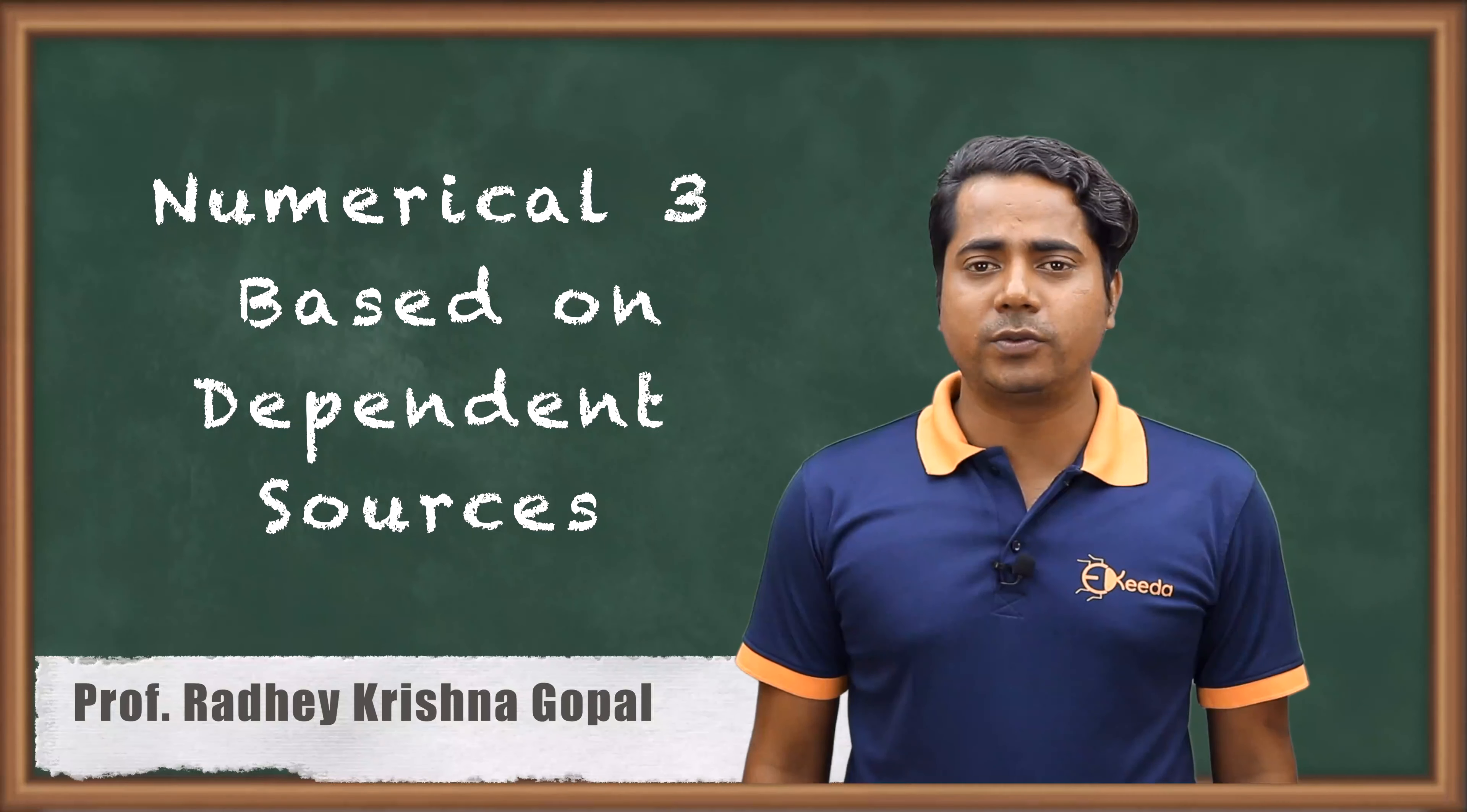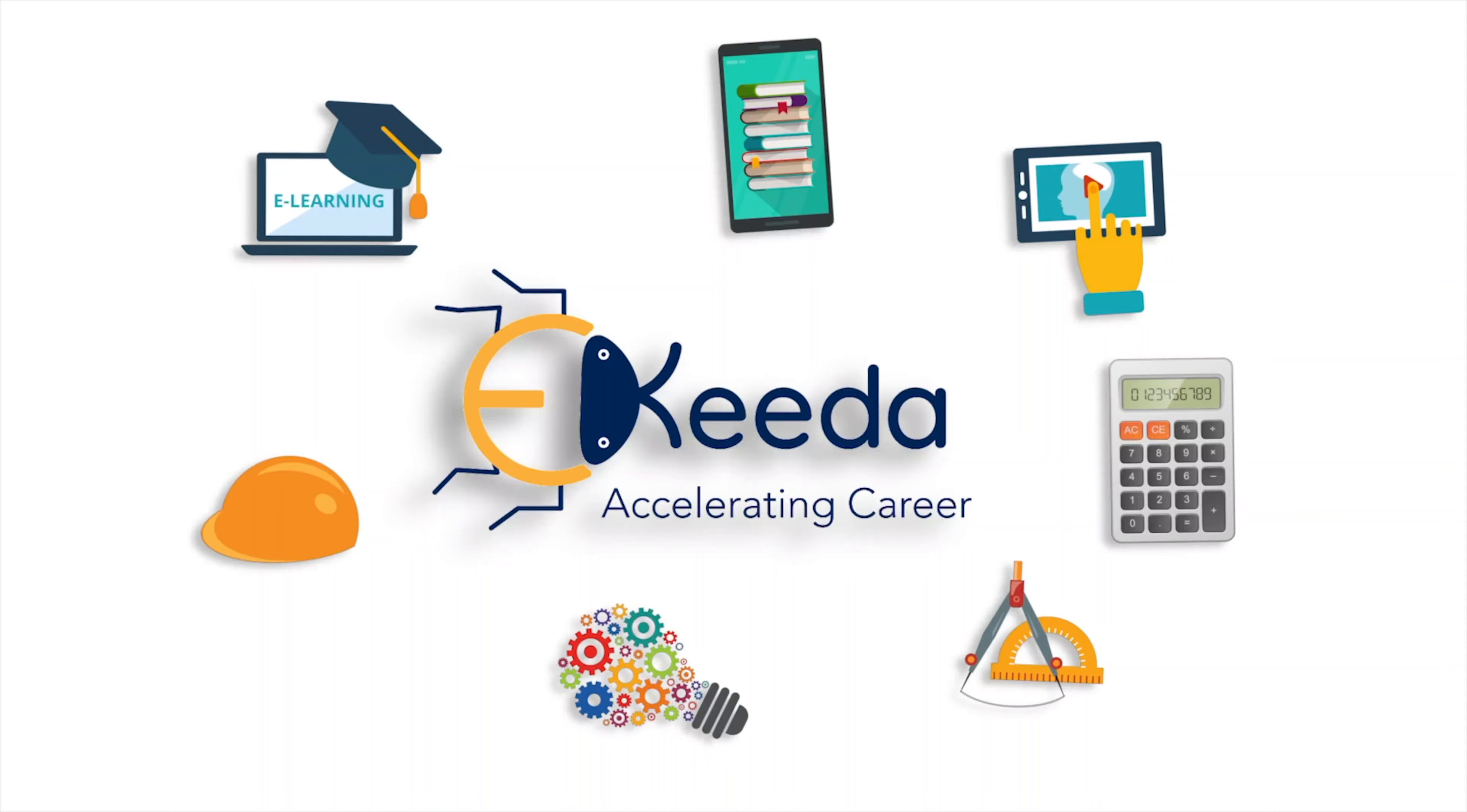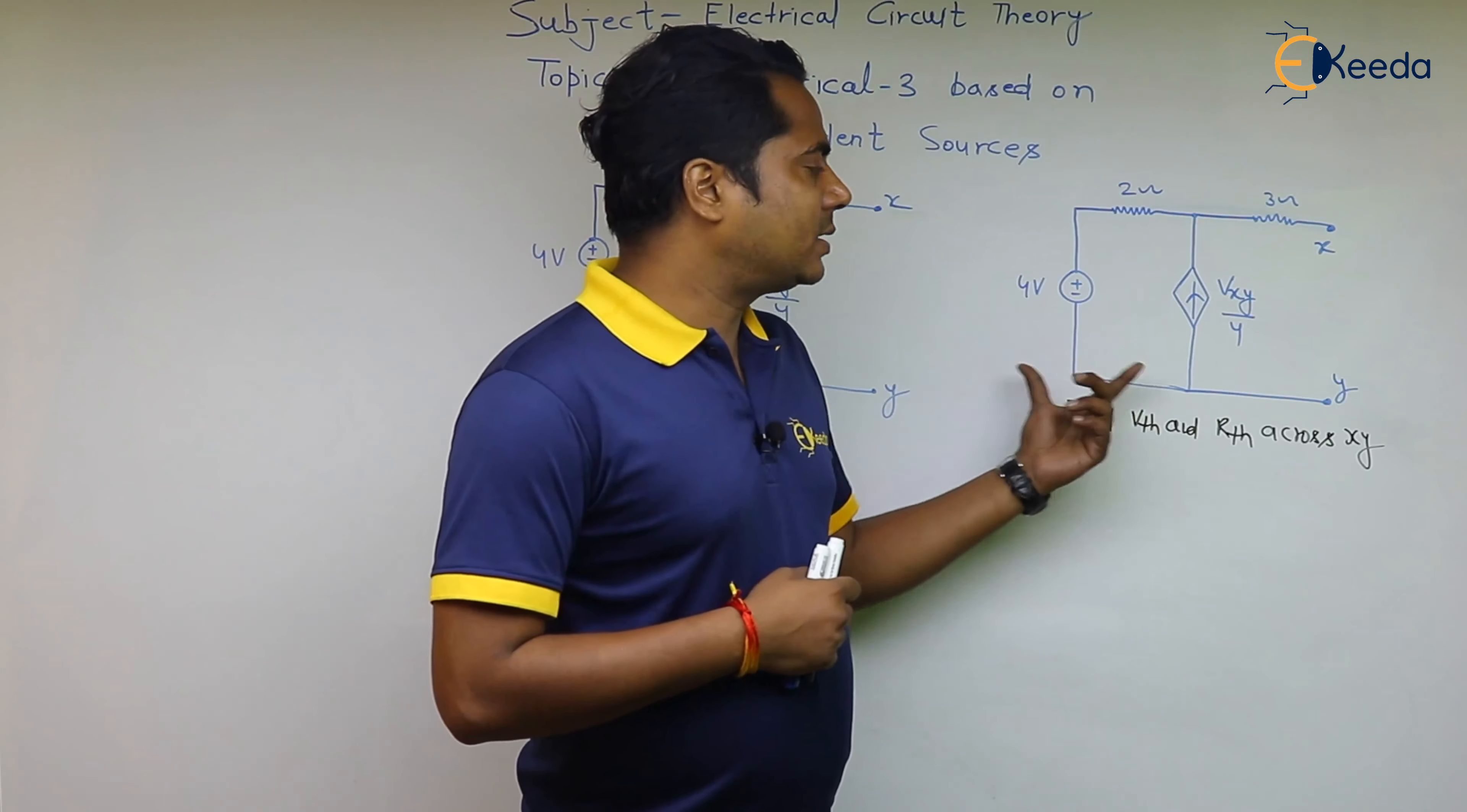Hello friends, we are going to solve numerical number 3 based on Thevenin's theorem in which the circuit will only have dependent sources. Coming to numerical number 3, find out the value of Vth and Rth across xy. This question has been asked in GATE examination.